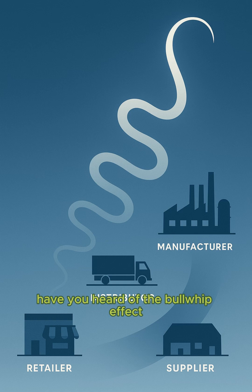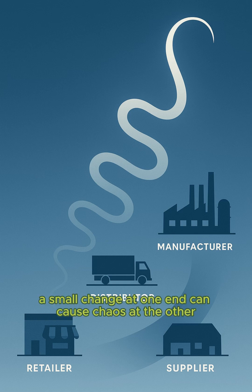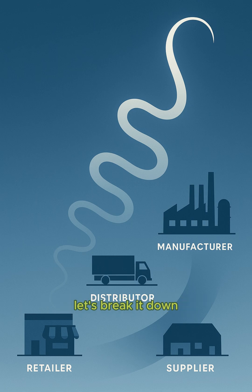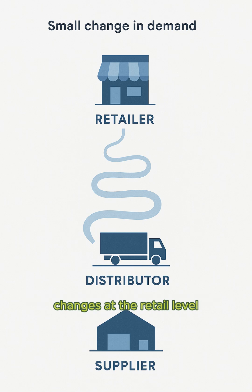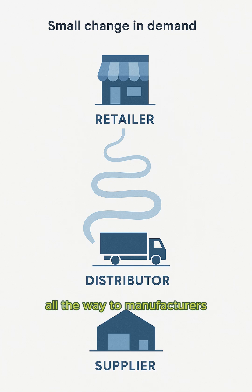Have you heard of the bullwhip effect in supply chains? A small change at one end can cause chaos at the other. The bullwhip effect happens when minor demand changes at the retail level create amplified shifts upstream, all the way to manufacturers.